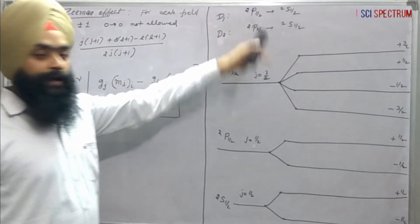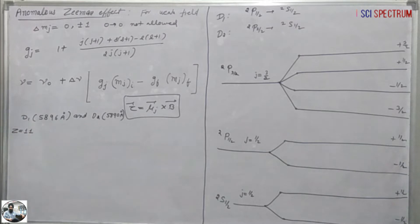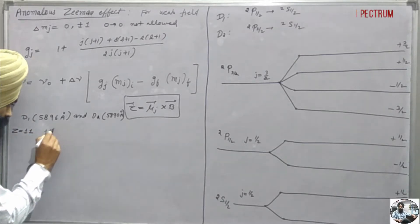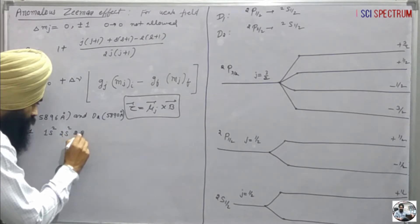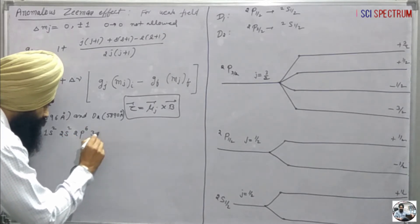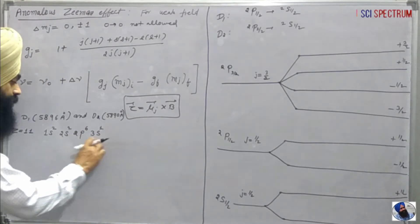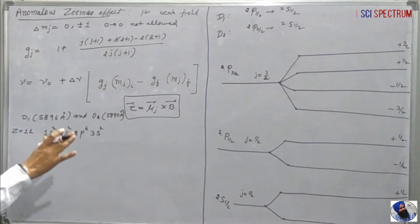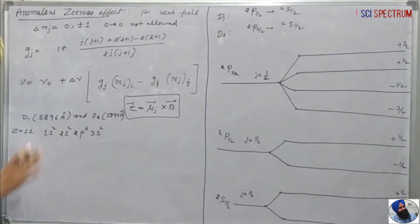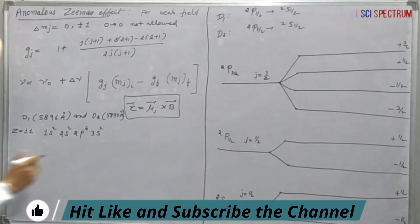Let us see how these term values are formed. We will start from the atomic number of sodium, which is 11, and the electronic configuration is 1s² 2s² 2p⁶ 3s¹. If you want to learn how the electronic structure is formed, we have a detailed video lecture in Part 1 and Part 2 that you can refer to.